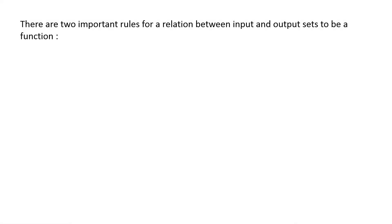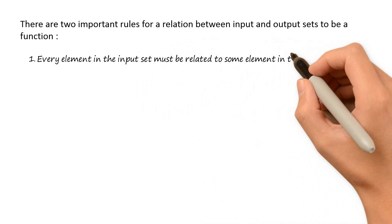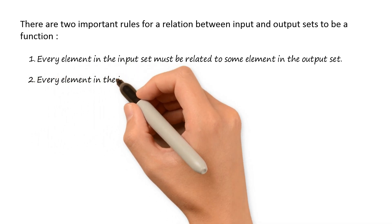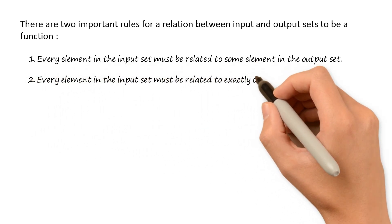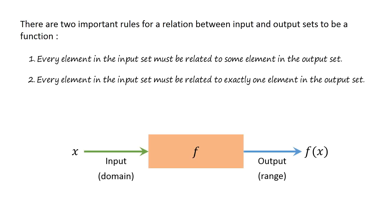There are two important rules for a relation between input and output sets to be a function. First, every element in the input set must be related to some element in the output set. Second, every element in the input set must be related to exactly one element in the output set. A function is single-valued — that is, every input value corresponds to only one output value. It will not give two or more results for the same input value. A function f is like a machine that produces an output value f of x in its range whenever we feed it an input value x from its domain.